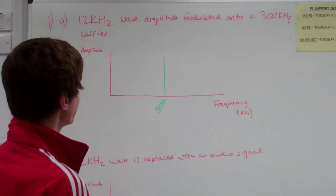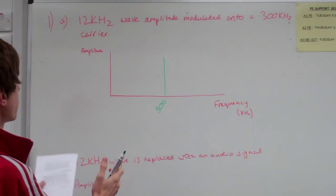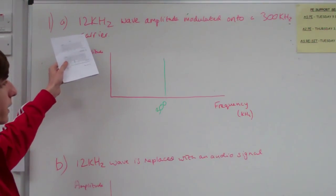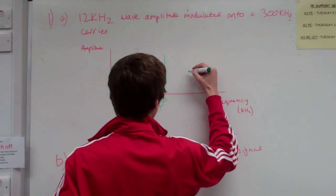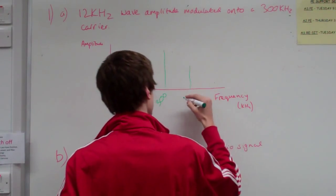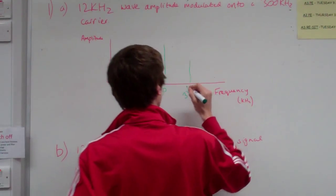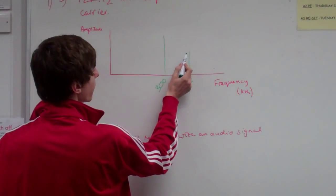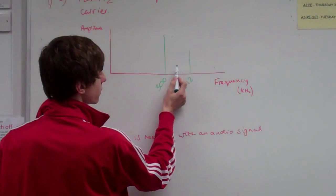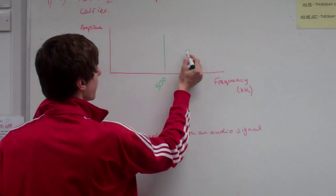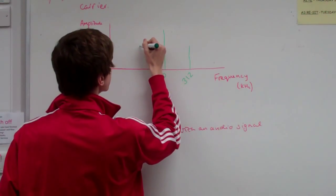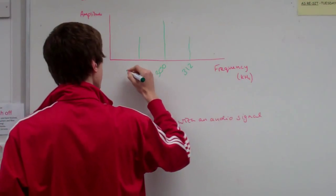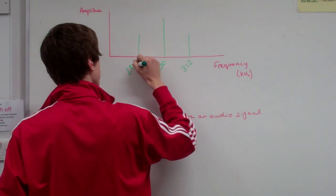Then all you do is you draw the next two sidebands. The two sidebands are going to be 300 plus 12 kilohertz, which is 312, and 300 minus 12 kilohertz, which is 288. You have to make sure that you get these sidebands the correct distance apart, and they're the same amplitude. It's quite difficult to do on the board, but hopefully that looks pretty symmetrical.